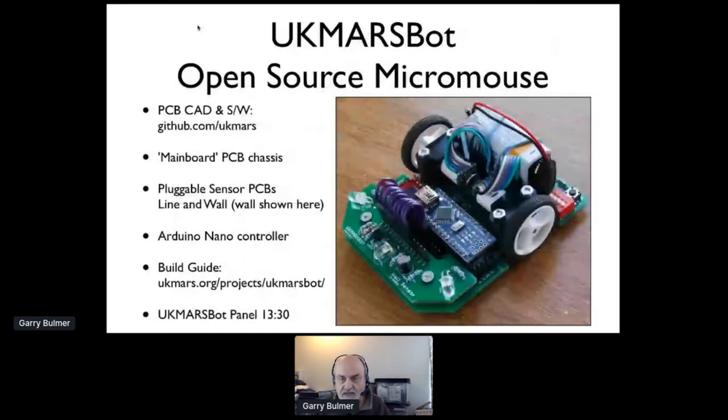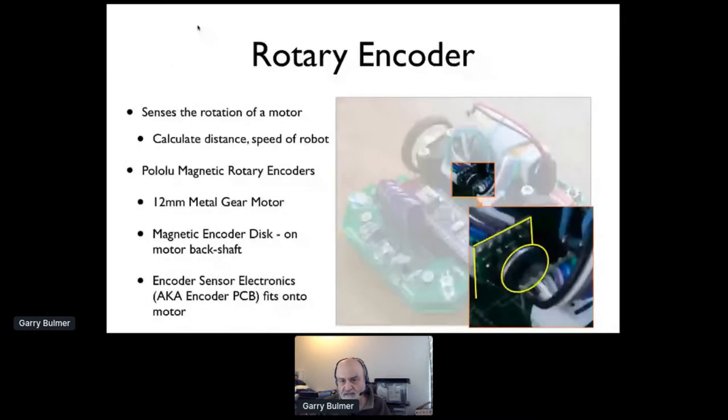This is the UK Mars bot that David was waving around. There's quite a lot of information about that, but the thing I'm going to focus on is the encoders fitted onto the back of the motors. The yellow oval is the encoder magnetic disc attached to the motor itself. It spins with the motor at exactly the same speed.